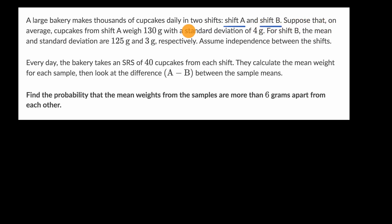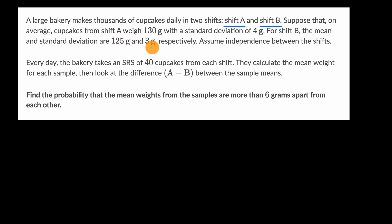Suppose that, on average, cupcakes from shift A weigh 130 grams with a standard deviation of four grams. For shift B, the mean and standard deviation are 125 grams and three grams respectively.